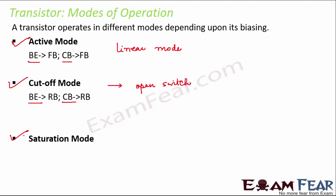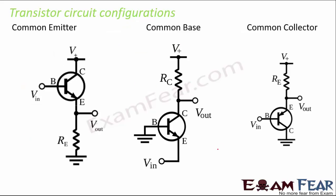In saturation mode, the base-emitter junction is forward biased and the collector-base junction is reverse biased, so the transistor behaves like a closed switch — current flows through the circuit. These are the three modes of operation: active, cutoff, and saturation.